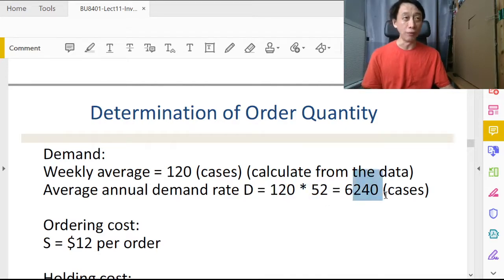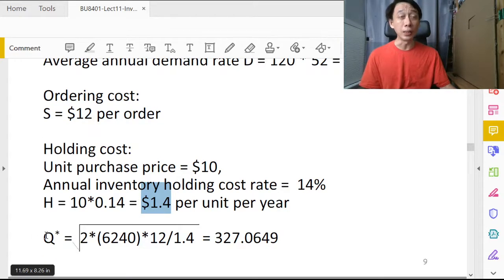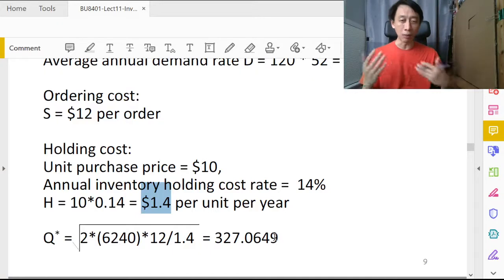The ordering cost, setup cost S, the unit purchase cost, that's the cost of a unit multiplied by 14%, that will give us our H. Using the EOQ formula, we calculated EOQ or the order quantity to be 327.0649. We keep the decimal there so that when we calculate the cost you'll be more precise.